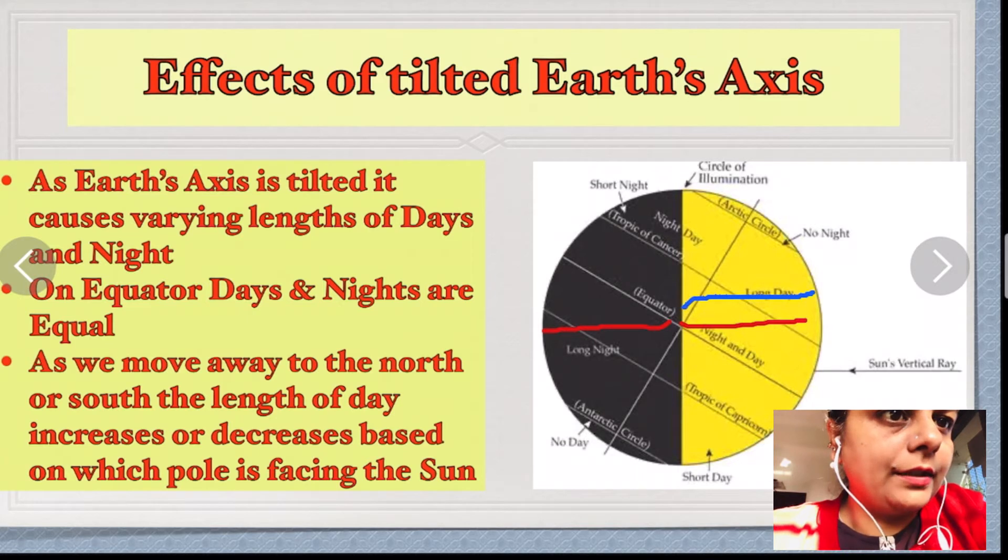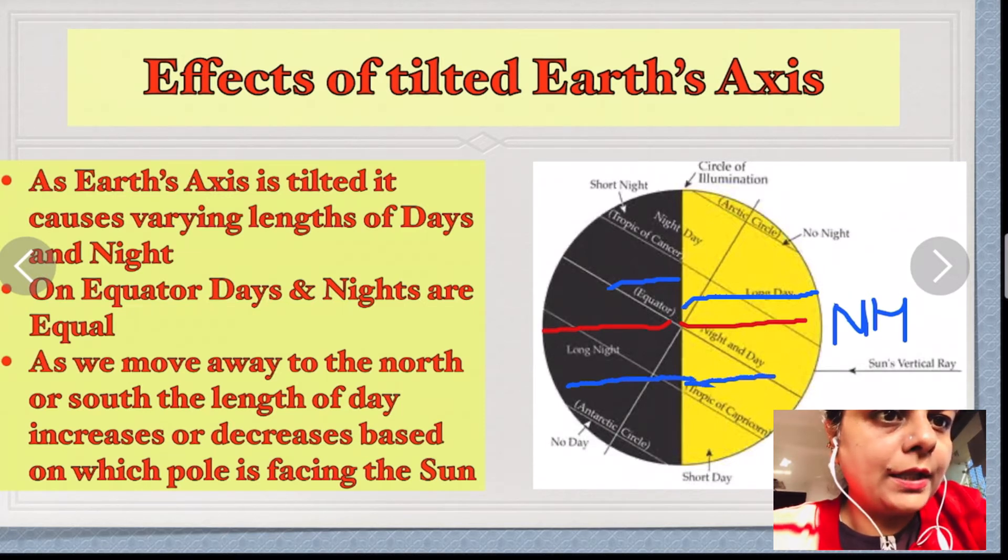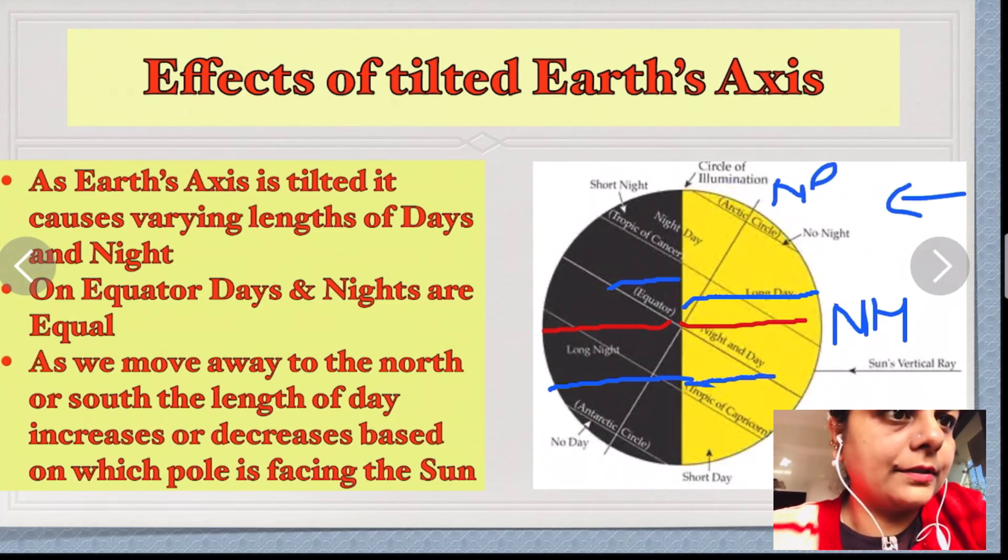The length of day is longer compared to length of night in the northern hemisphere. Similarly, the length of day is shorter compared to length of night in the southern hemisphere. Why? Because the North Pole is facing the Sun and the South Pole is away from the Sun.